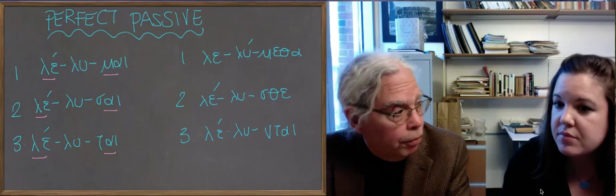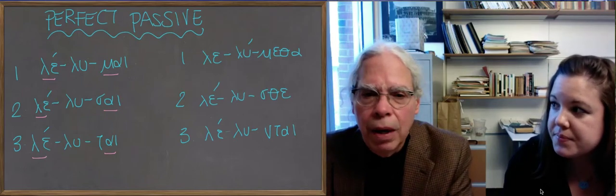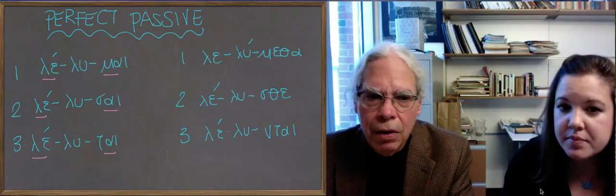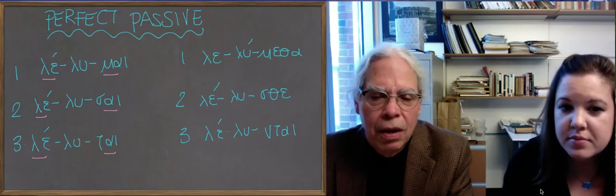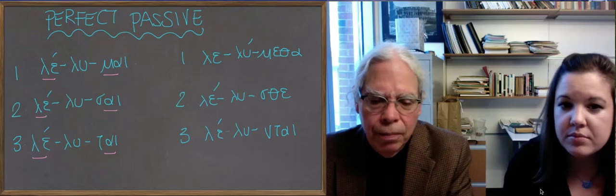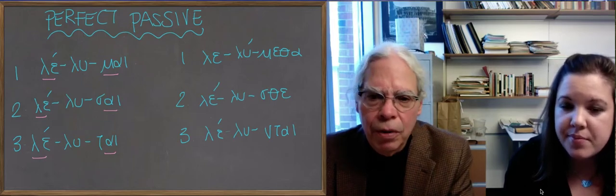There's no thematic vowel between the personal ending, my sai tai methastha nntai, and mein sa ta methastha nnta, and the actual stem of the verb.